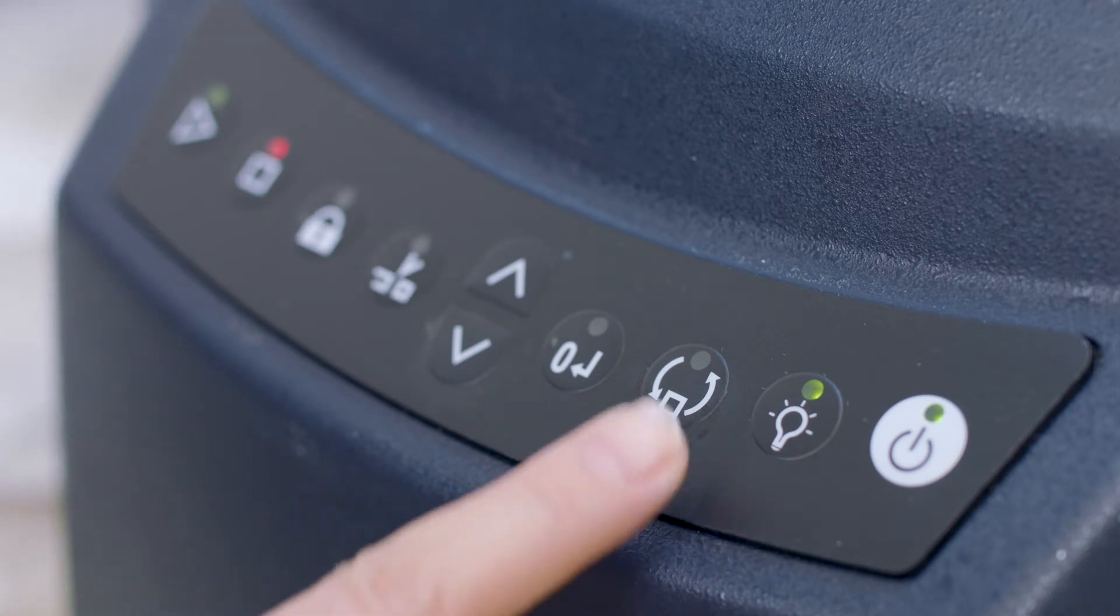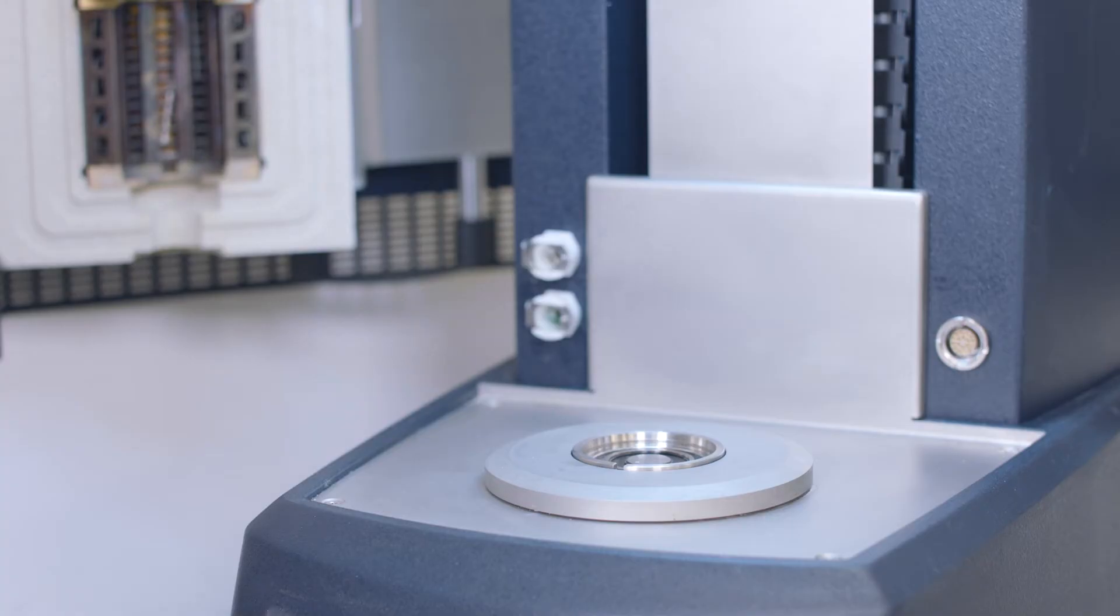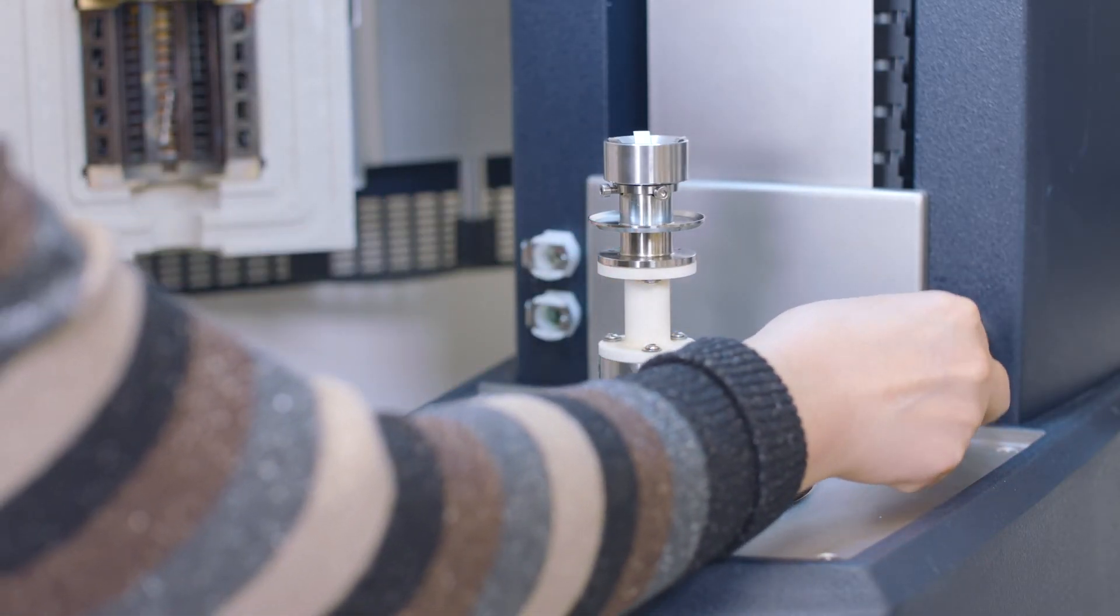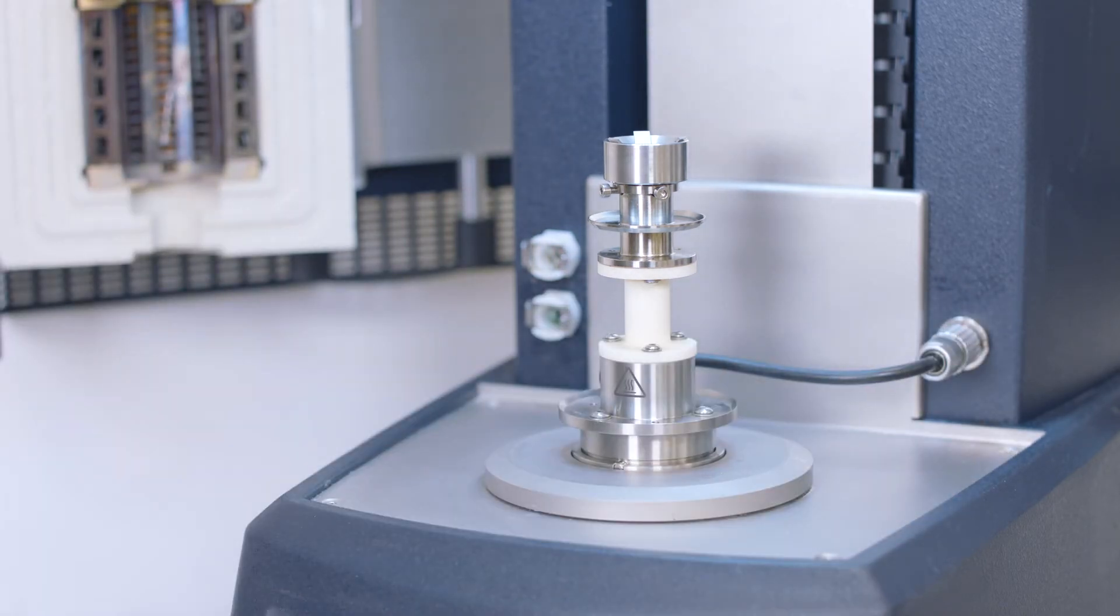From the instrument control panel, press this button to temporarily release the magnet. Put the ETC bottom geometry onto the instrument bottom stage. Then, insert the Smart Swap plug with the red dot facing up.